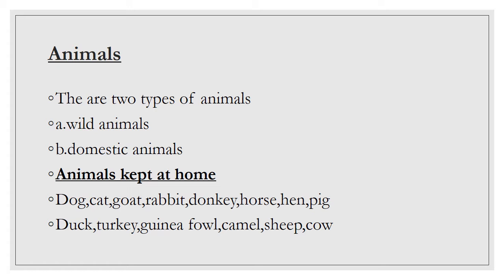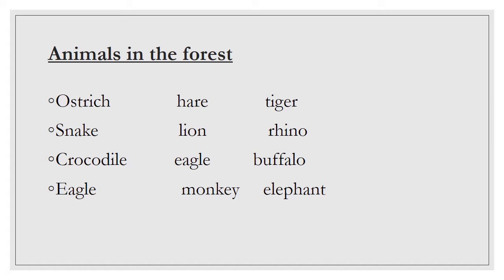Animals kept at home are called domestic animals. Examples are dog, cat, goat, rabbit, donkey, horse, hen, pig, duck, turkey, guinea fowl, camel, sheep, cow, and many others.